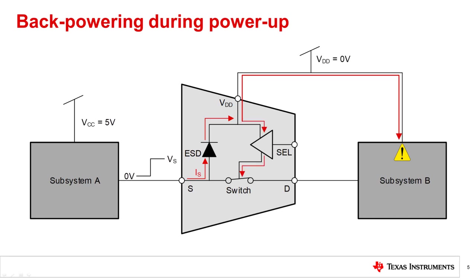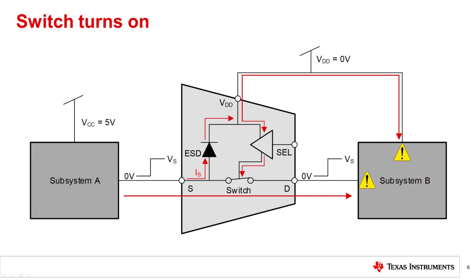Because of the sudden voltage at VDD of the switch, the internal control logic may also be backpowered. This causes the switch to turn on, creating a signal path from source to drain. The signal from subsystem A is then transmitted through the switch to subsystem B before subsystem B has been powered up. As a result of backpowering, the switch and subsystem B may be damaged.